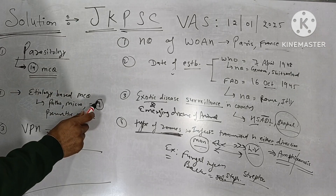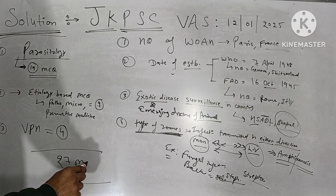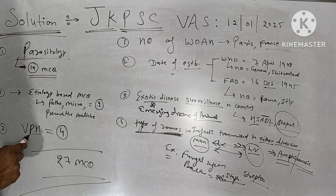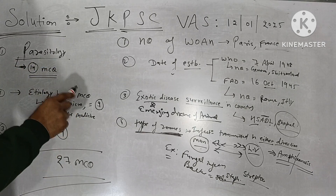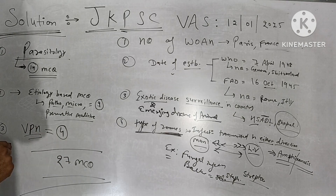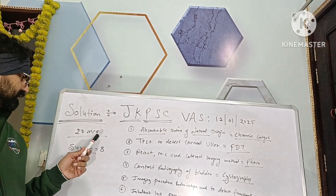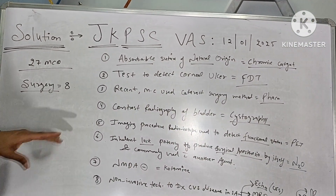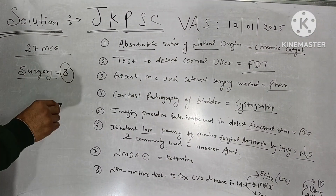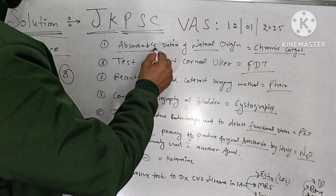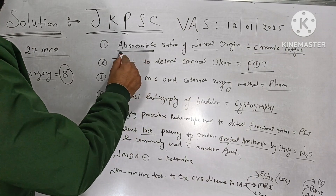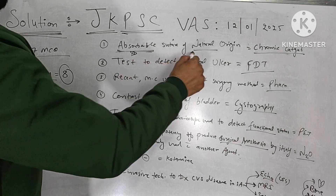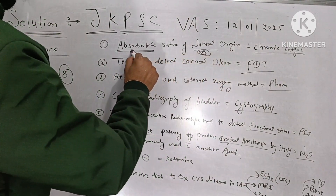At this point, a total of 27 MCQs have been completed from the sections of parasitology, VPS, and etiology-based questions from different sections. We will now start with the surgery section where eight MCQs have been asked. The first was from suture materials.